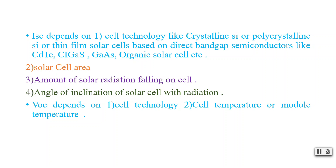Isc also depends on the amount of solar radiation falling on the cell. Solar radiation is not fixed; it changes with time, so based on that variation Isc also varies. Next is the angle of inclination of the solar cell. With respect to time, the angle at which solar radiation falls on the cell is changing. When radiation falls directly on the cell there is maximum Isc, but as the inclination increases, the magnitude of Isc decreases.